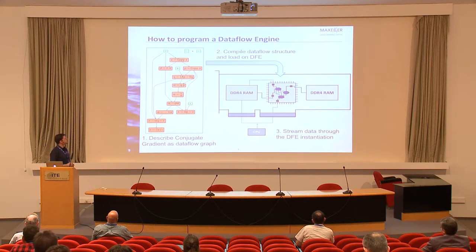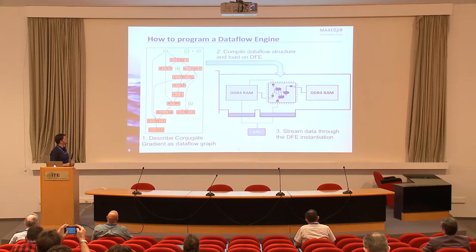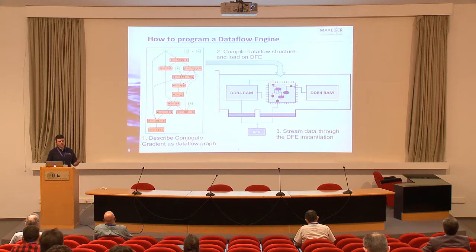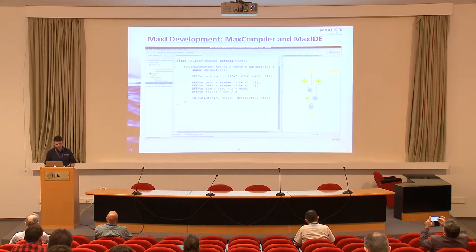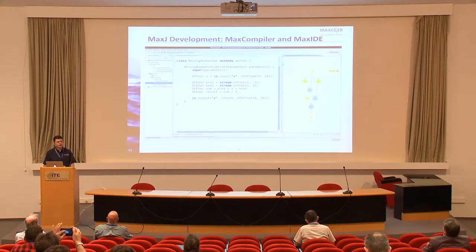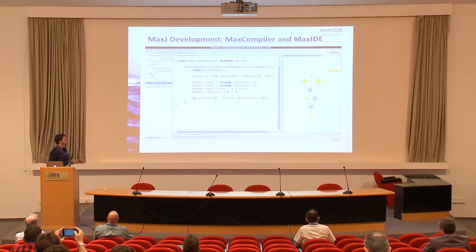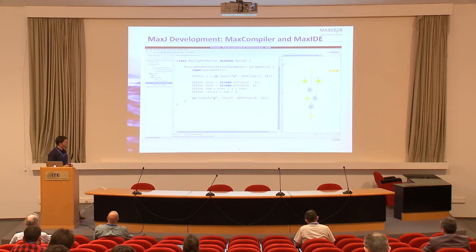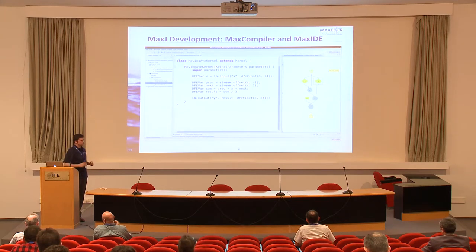How do we actually do this? You have to take your algorithm and describe it in a dataflow manner. Here's a high-level example — quantum gradient — and essentially you describe it as a pipeline. We have a language called MaxJ, a meta-language based on Java, with many dataflow extensions. What you're doing is describing graphs — pipelines really.